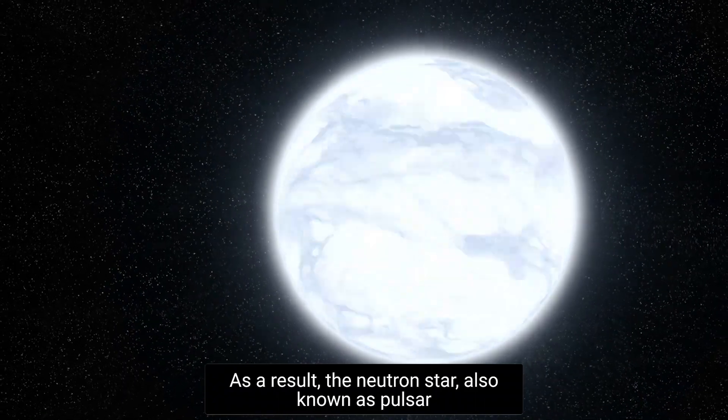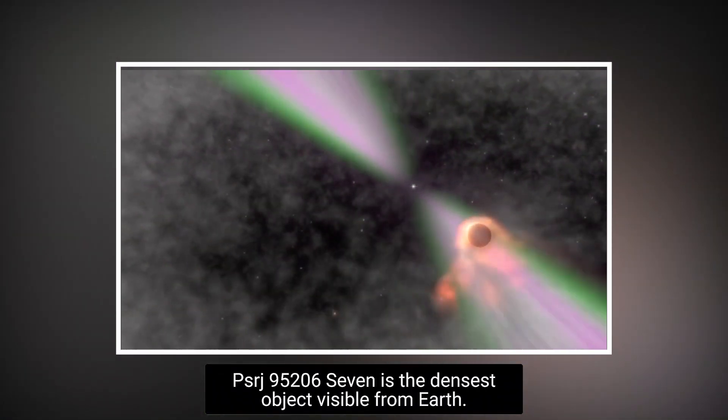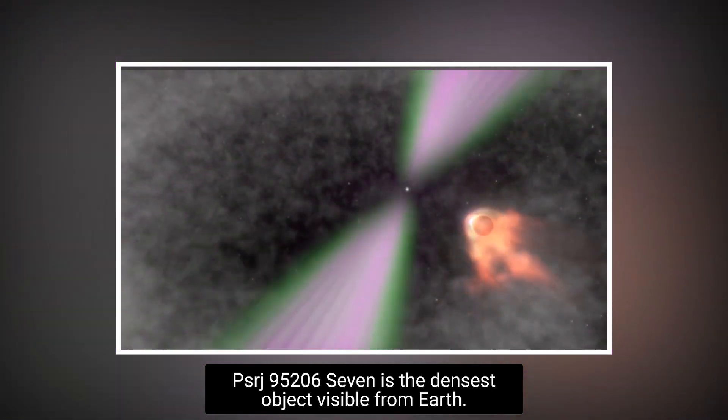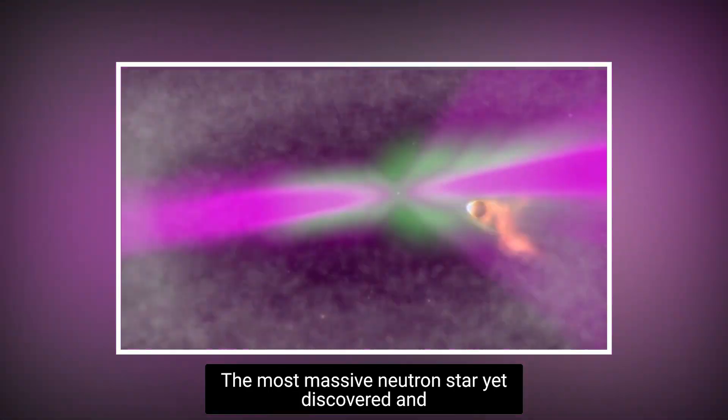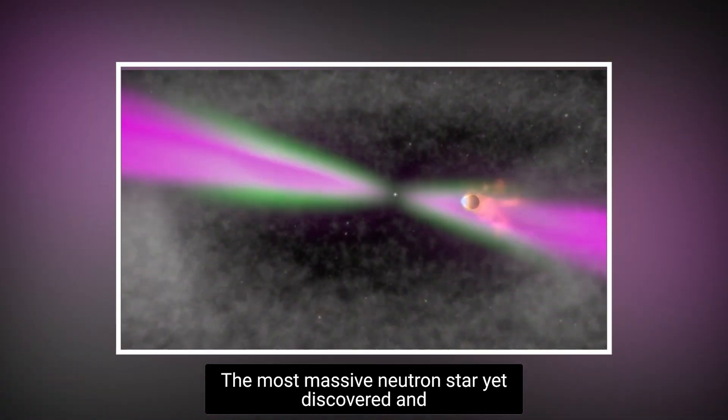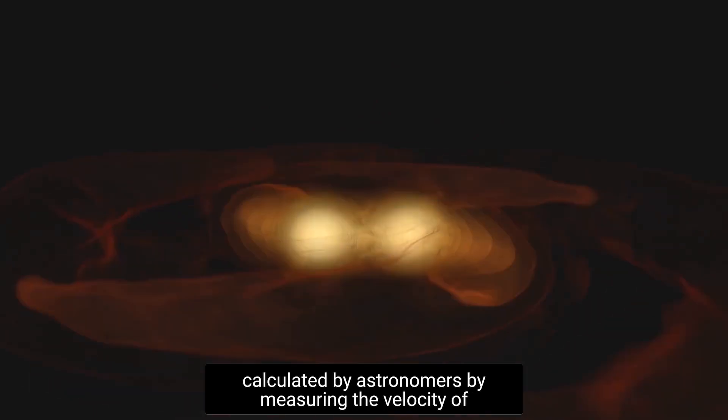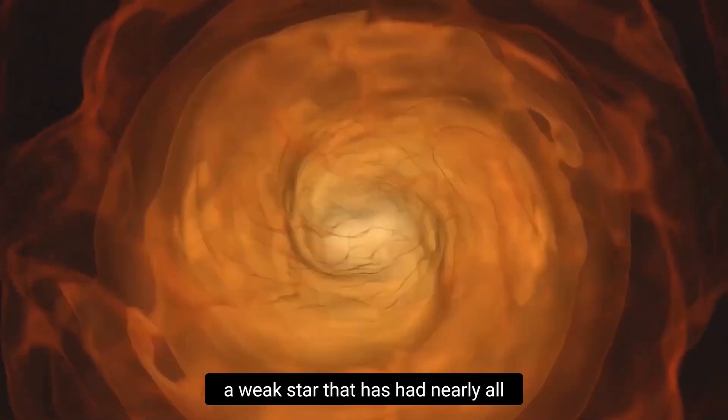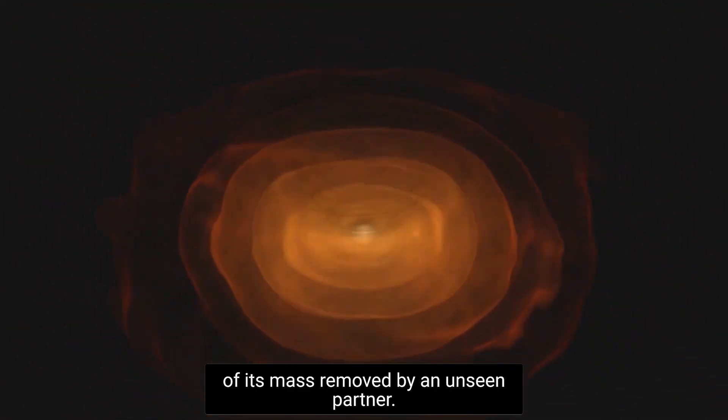As a result, the neutron star, also known as pulsar PSR J0952-0607, is the densest object visible from Earth. The most massive neutron star yet discovered, and perhaps the upper limit for neutron stars, was calculated by astronomers by measuring the velocity of a weak star that has had nearly all of its mass removed by an unseen partner.